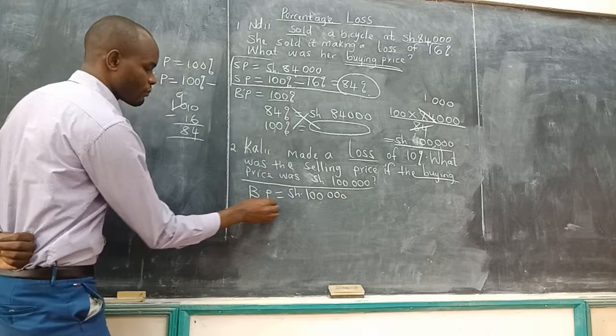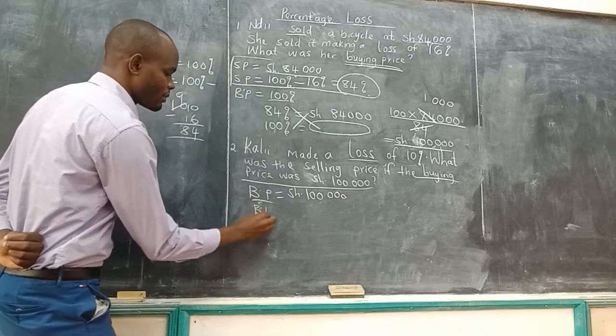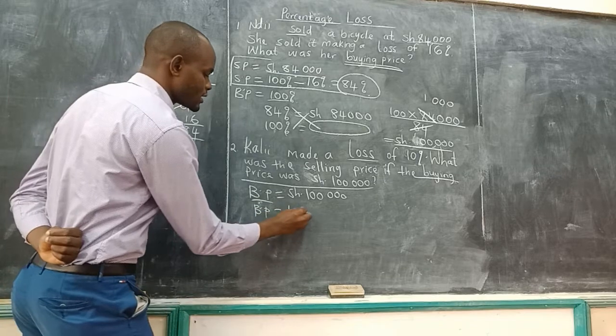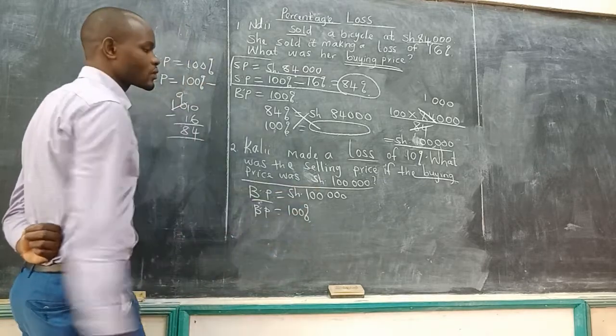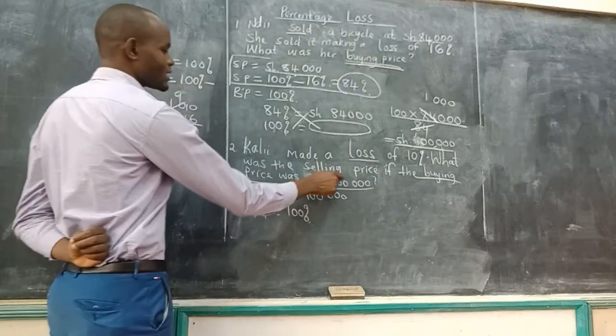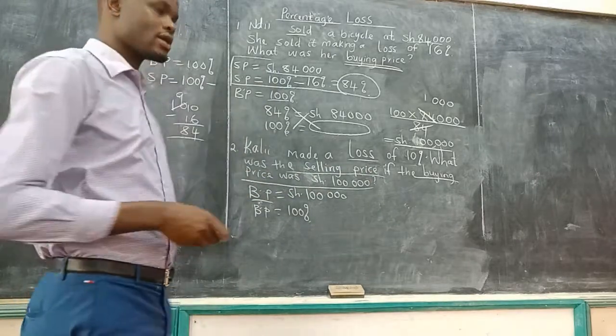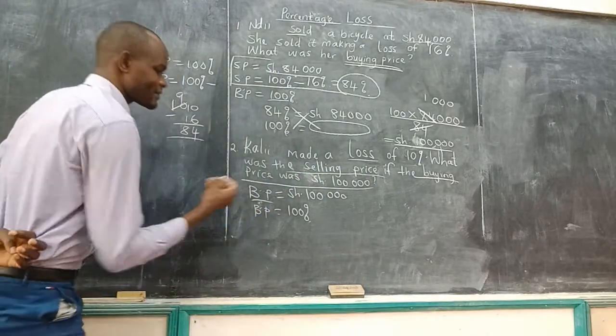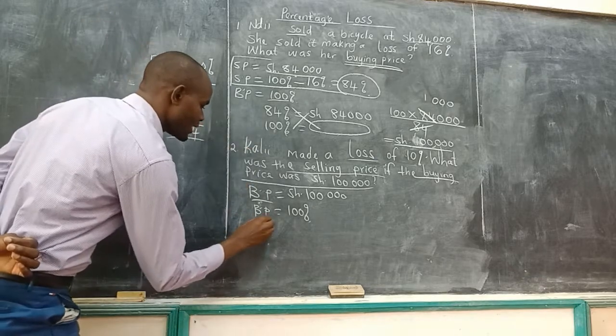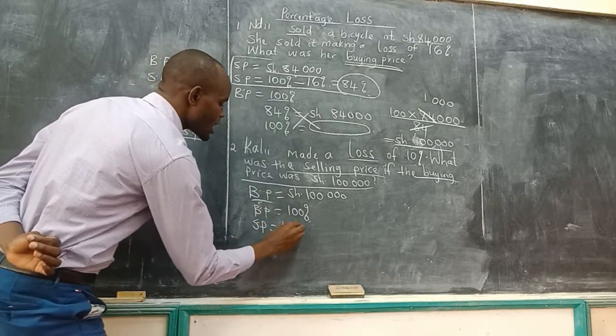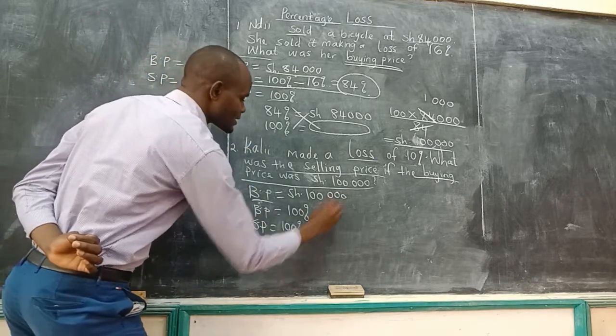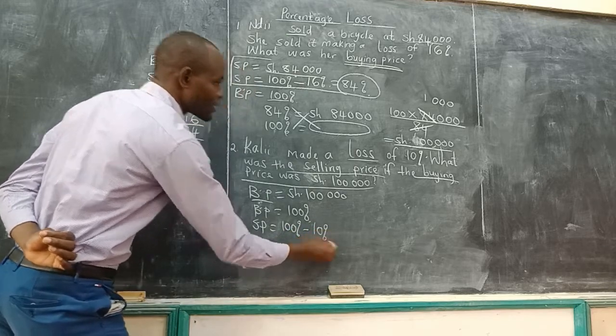Remember the percentage of buying price, as we said before, before you make a loss, it is 100%. What is the question? What was the selling price? When you are making loss, the selling price is less. You sell less. So the selling price will be 100% minus 10%, minus the loss which you make.